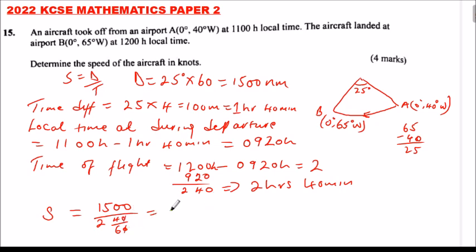You can simplify and say this is 1500 divide by 8 over 3, which is 1500 multiply by 3 over 8. You can compute through that using your calculator, you will get 562.5 knots.